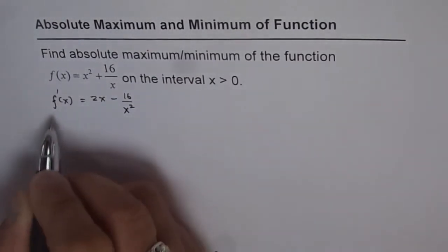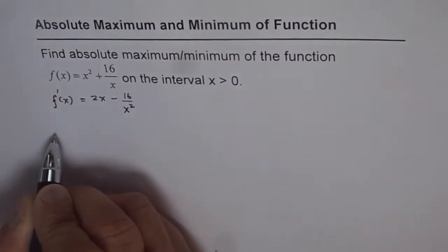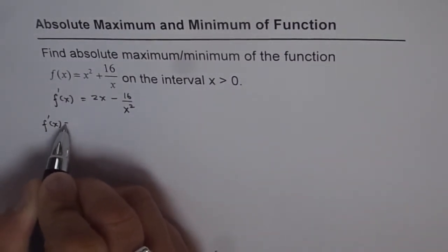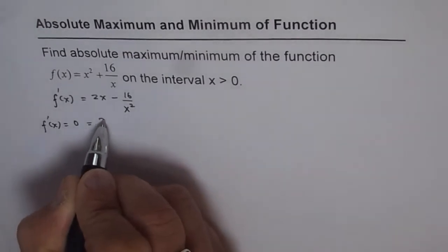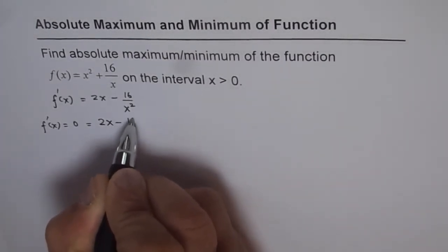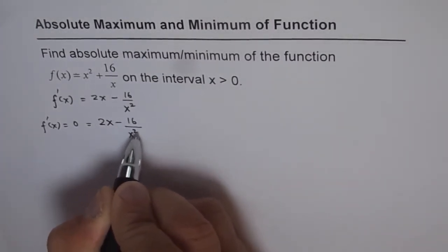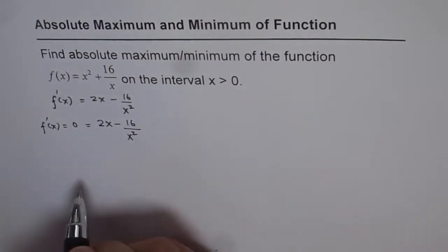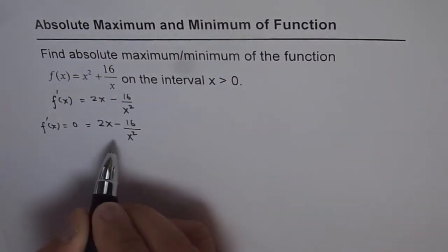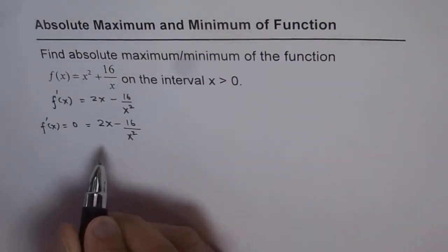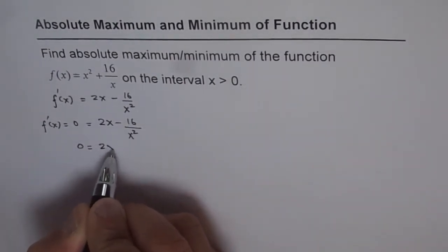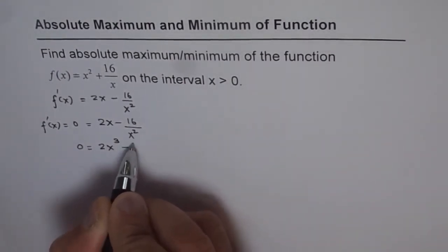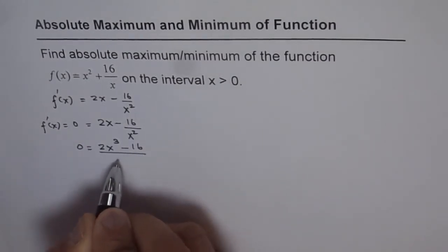Now to find critical number, f'(x) will be equated to 0. So we have f'(x) = 0, which equals 2x - 16/x². Let's solve this. We can multiply by x² and get 0 = 2x³ - 16/x².